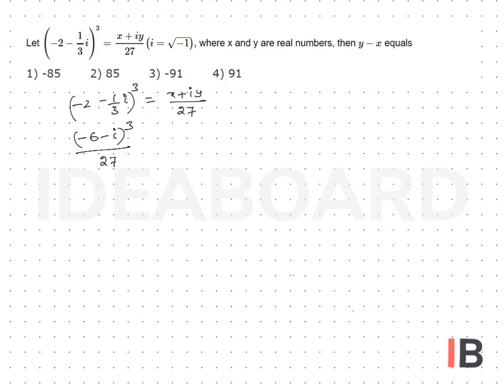27 equals (x + iy)/27. The 27s cancel. Expanding this side, we get -198 - 107i = x + iy. Comparing real and imaginary parts...